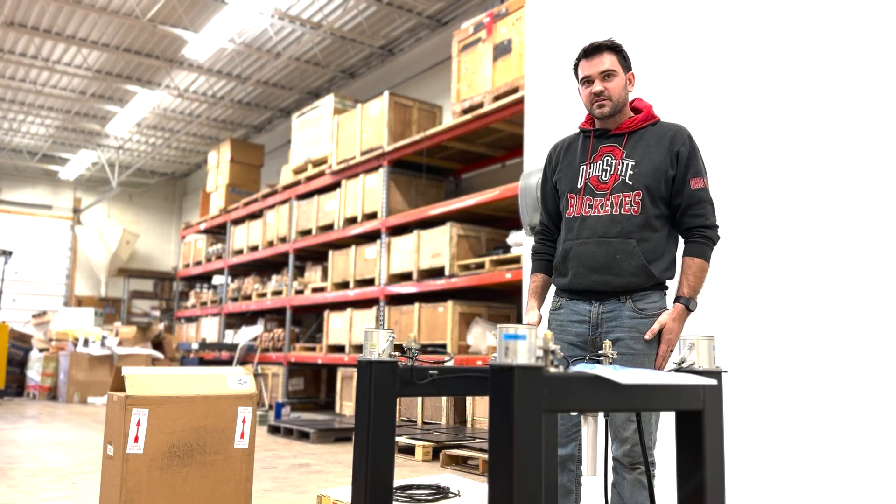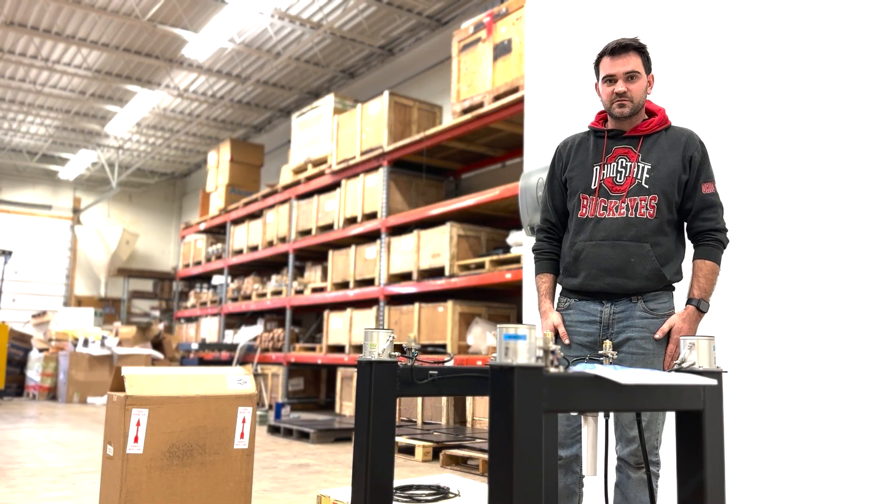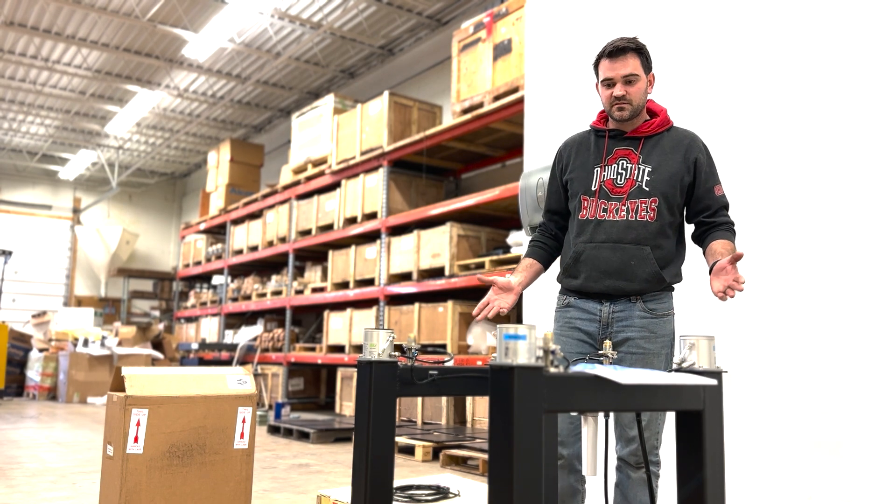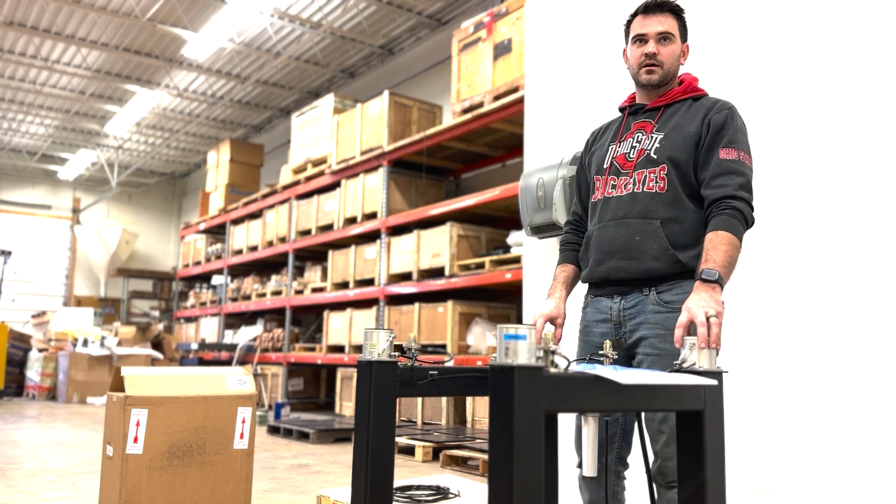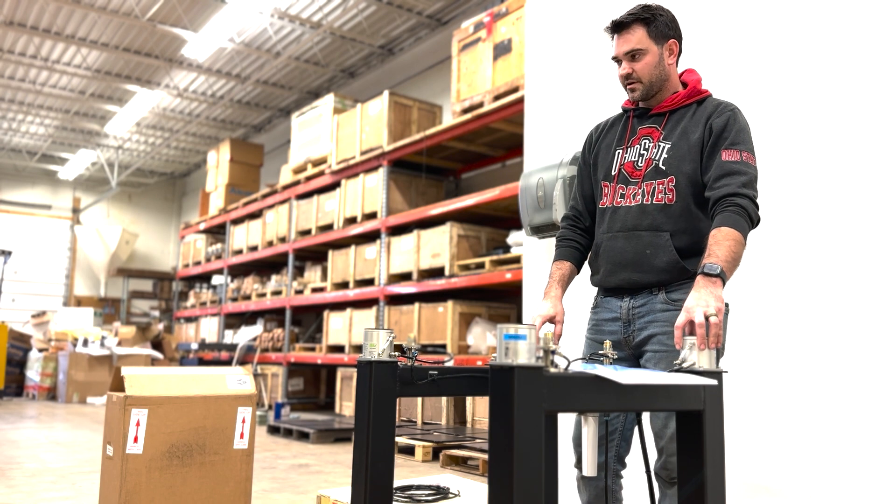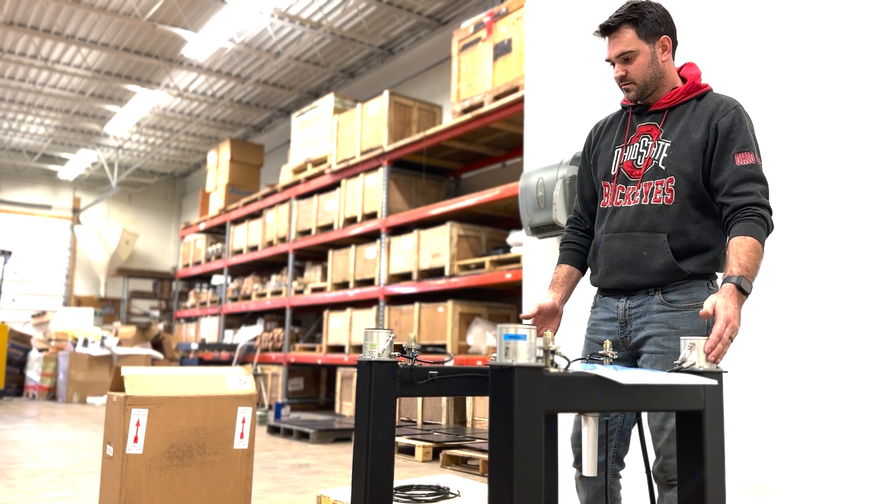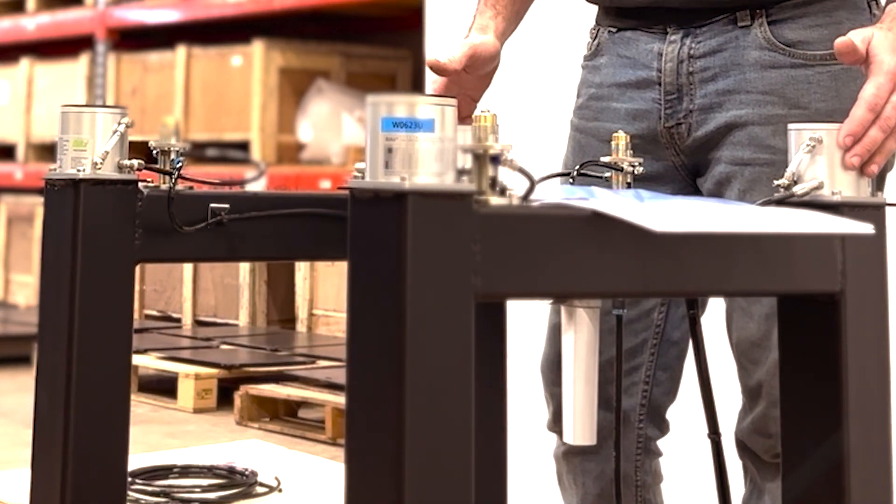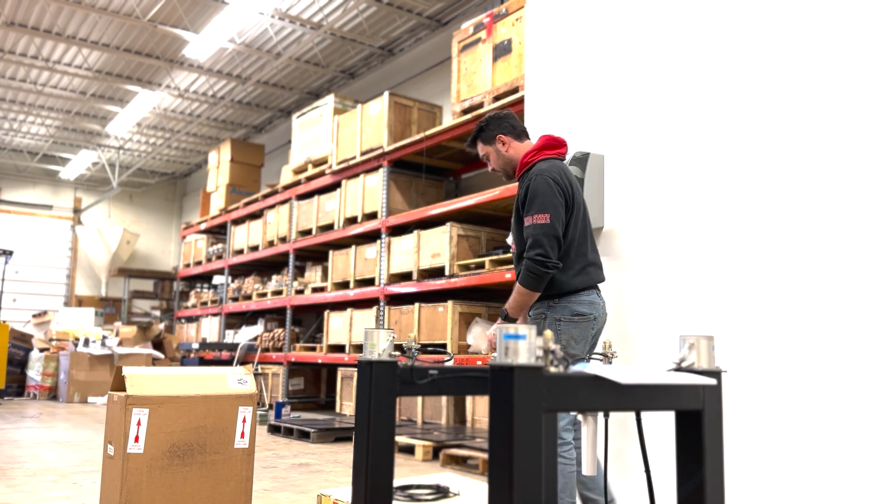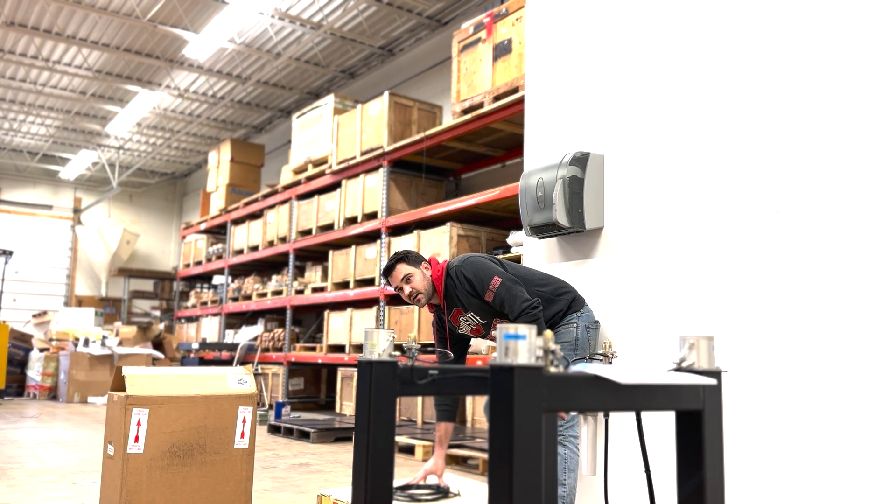With each isolation table, you're going to receive two packages or two skids. The first one's going to be a skid like this. It's going to have the table frame on it, the air springs and everything already mounted to it, typically packaged with some cardboard around it. The second skid you will have will look like this, and this will be your granite top.